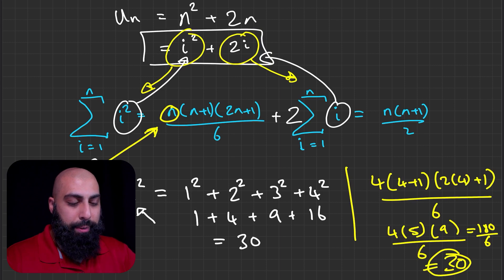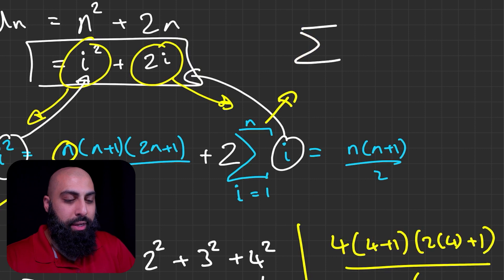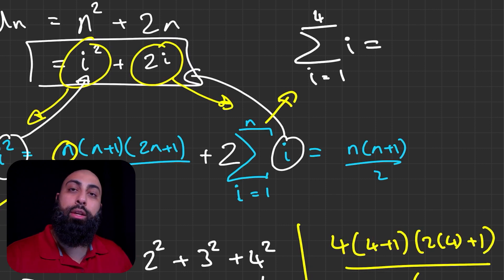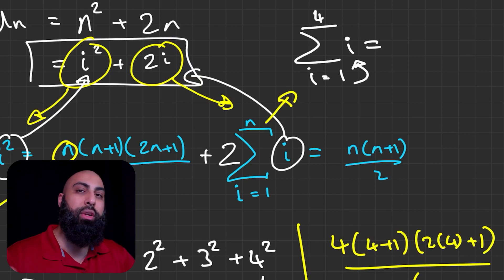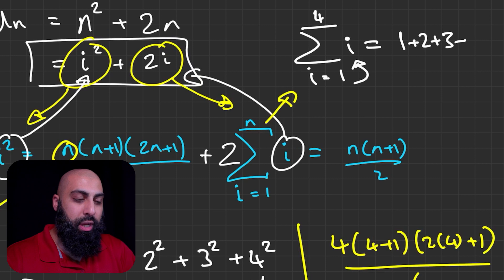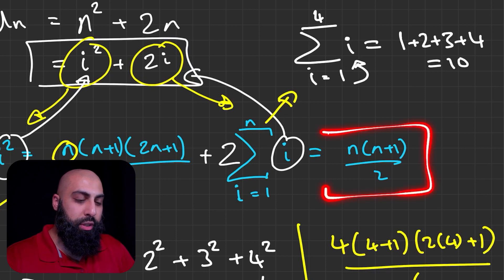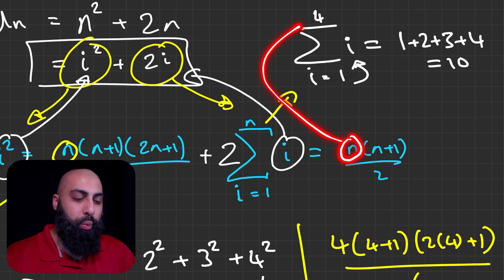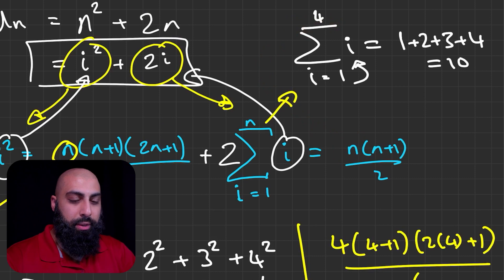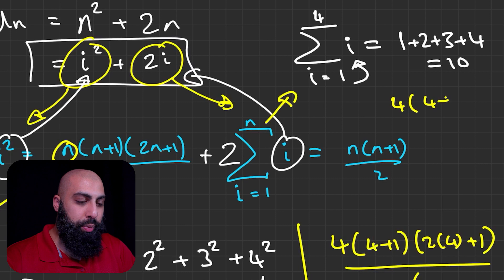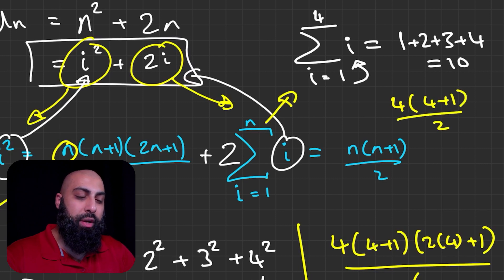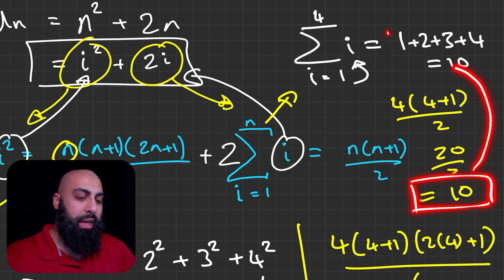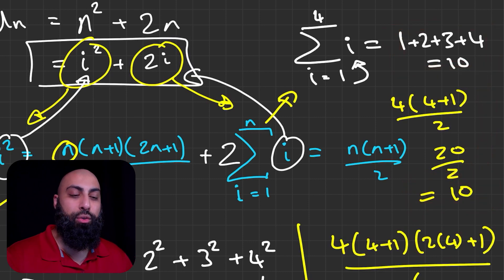Let's also work out the second formula. The sum of i from 1 to 4 means we replace i with 1, 2, 3, and 4, giving us 1 plus 2 plus 3 plus 4, which equals 10. Using the formula with n equals 4: 4(4+1) all over 2. That's 4 plus 1 equals 5, times 4 equals 20, divided by 2 equals 10. You can see the summation formula gives the same value.